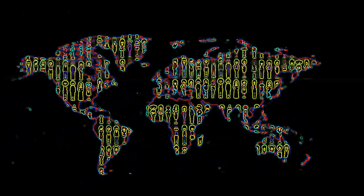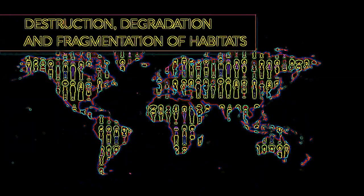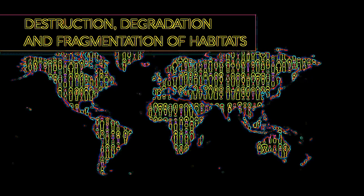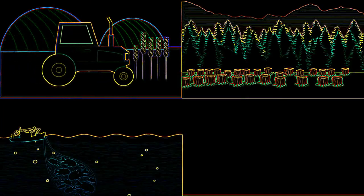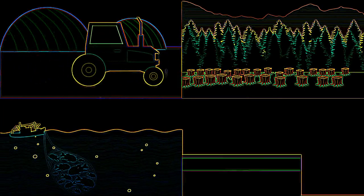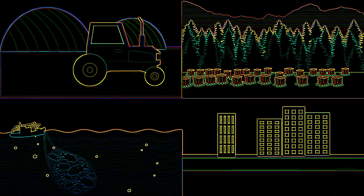As the world population has grown from 1.5 billion in 1900 to nearly 7.5 billion people today, unsurprisingly the land use has changed. Habitats have been destroyed in favour of agriculture, forestry, fishing, urbanisation and manufacturing.